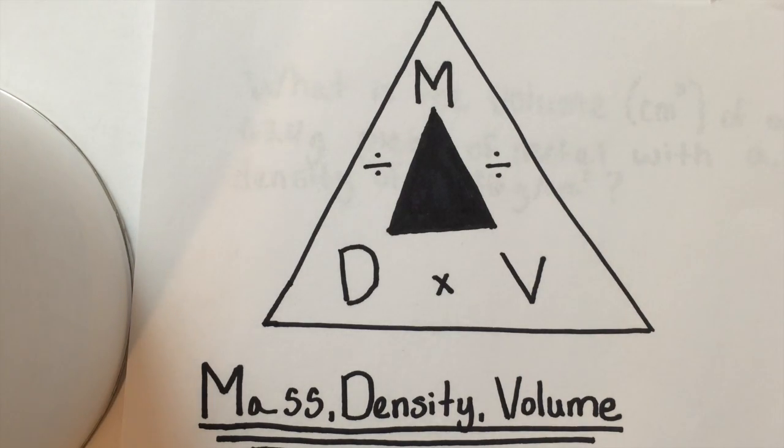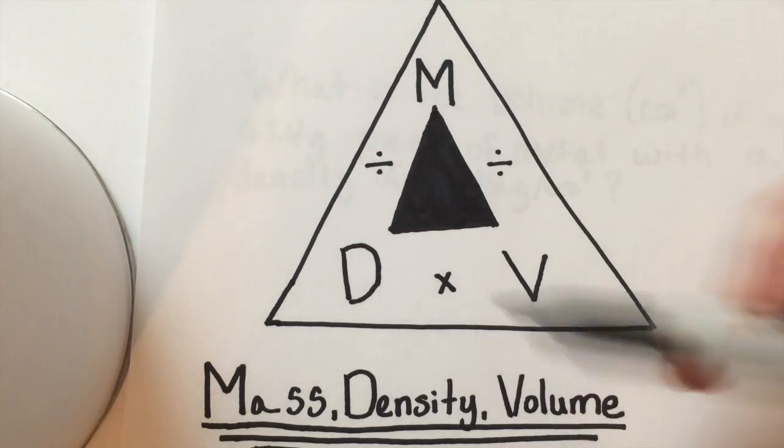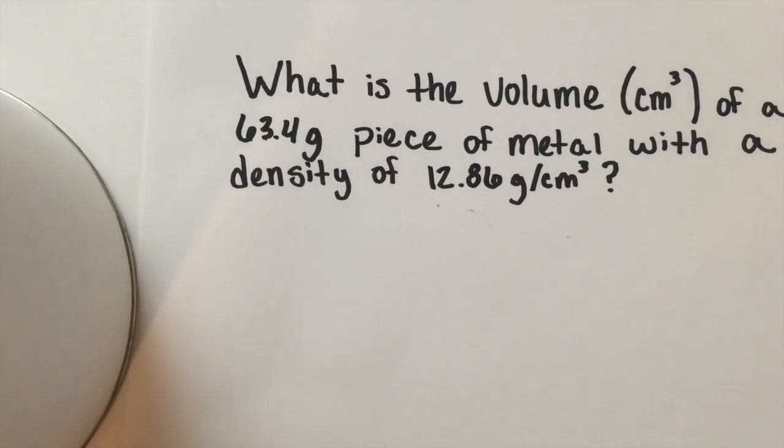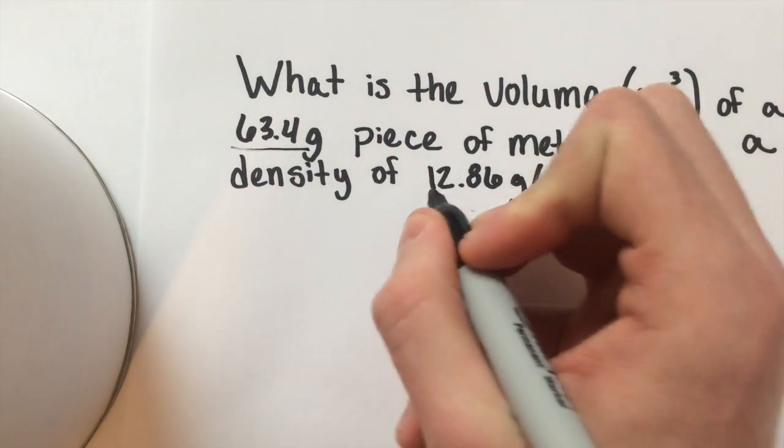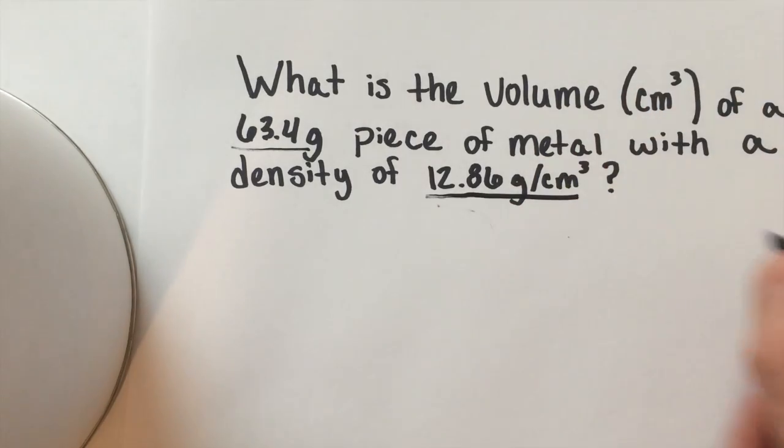So let's take a look at how we can use this triangle for this problem. We are looking for volume, which leaves us with mass over density. So let's go back to the question.